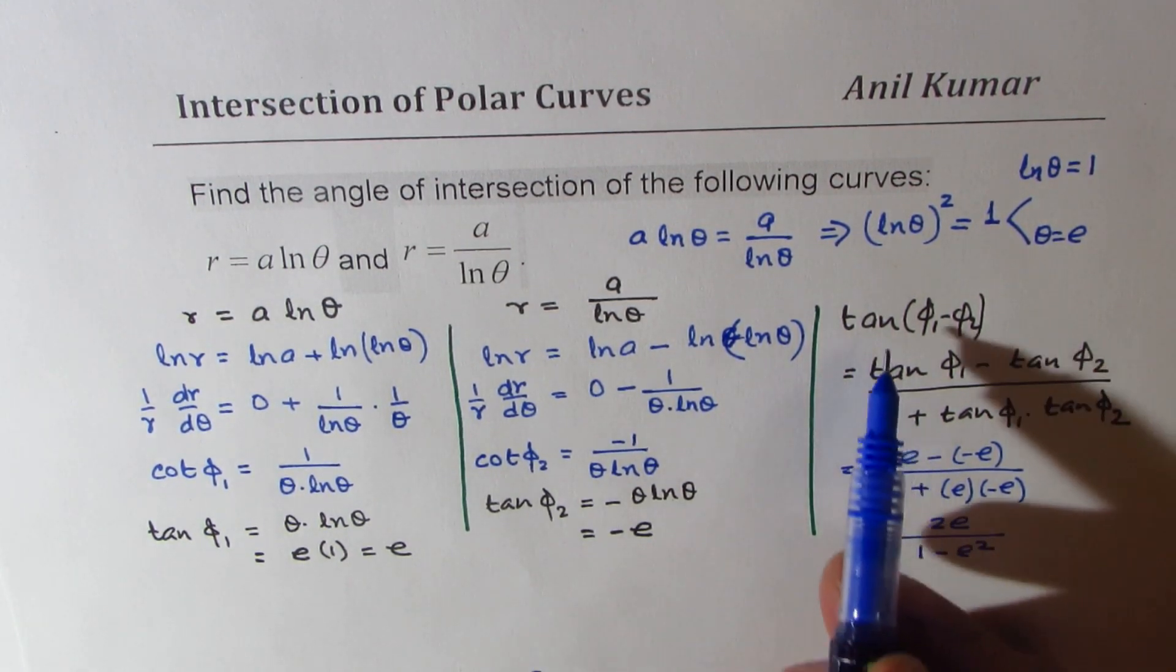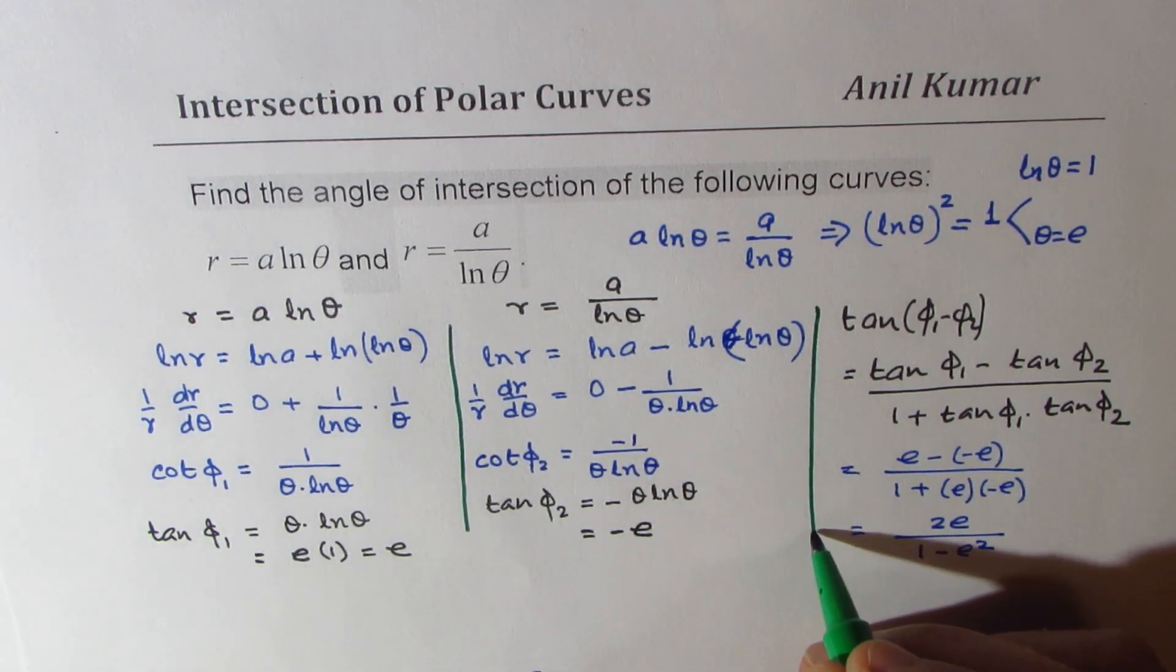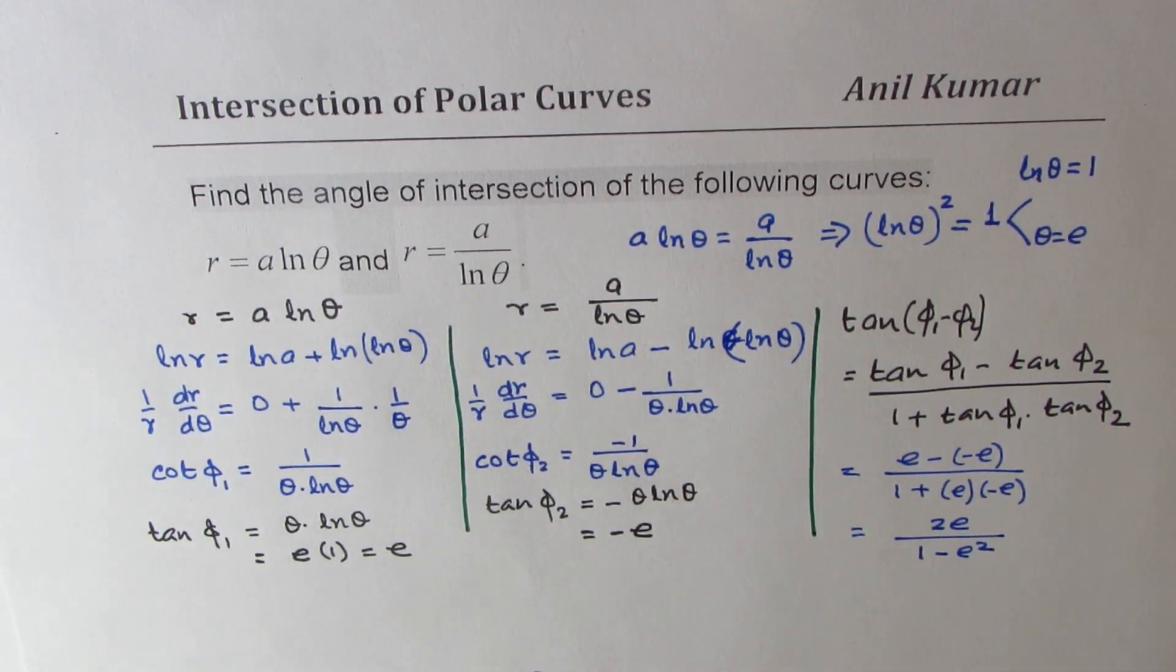So that is the value of tan phi 1 minus phi 2. So what is phi 1 minus phi 2? We can write down the solution now.